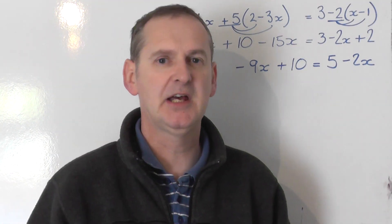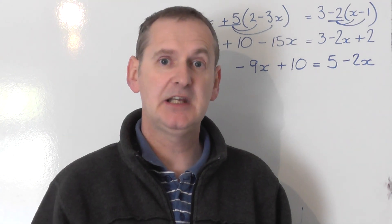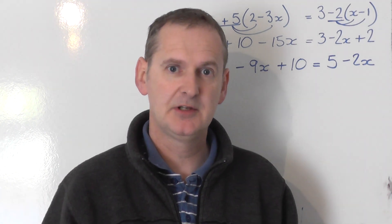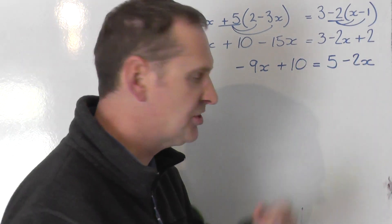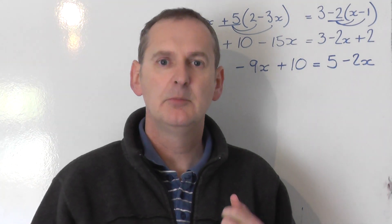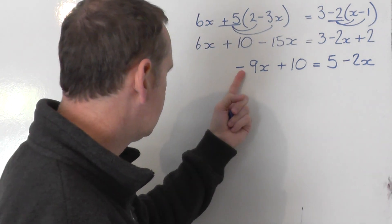An equation with x's on both sides. We're going to collect the x's on the side with most x's. Be careful. You might think because that's 9 and that's 2 there's more x's on the left. But we've got minus 9x.